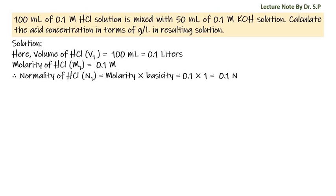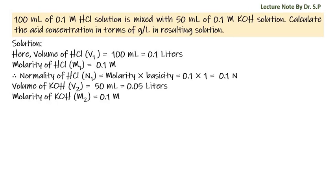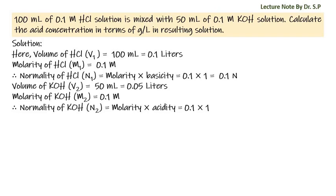Given volume of potassium hydroxide V2 is equal to 50 milliliters, that is equal to 0.05 liters. Given molarity of potassium hydroxide M2 is equal to 0.1 molar. Again, we have to convert molarity into normality. Therefore, normality of potassium hydroxide N2 is equal to molarity into acidity, that is equal to 0.1 into 1. The acidity of potassium hydroxide is 1, so resulting normality N2 is equal to 0.1 N.